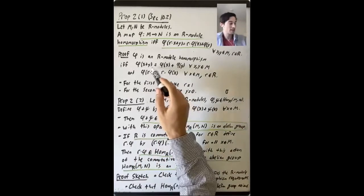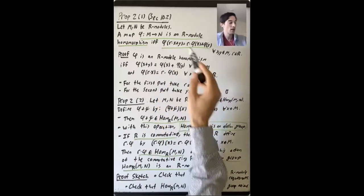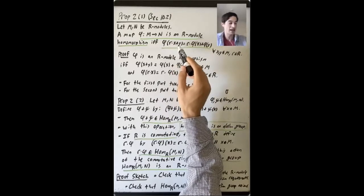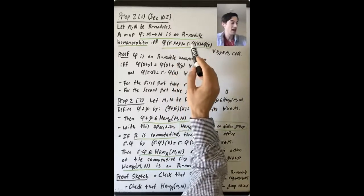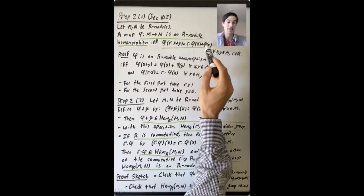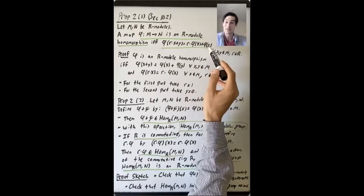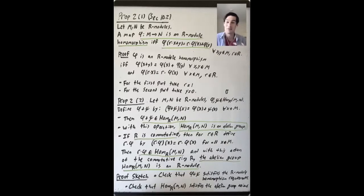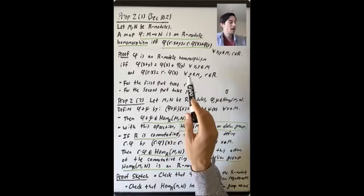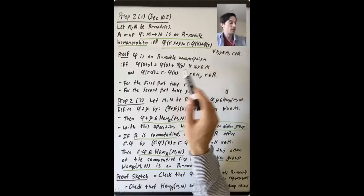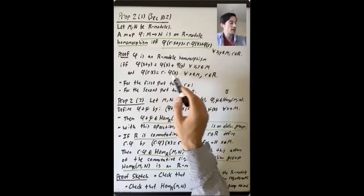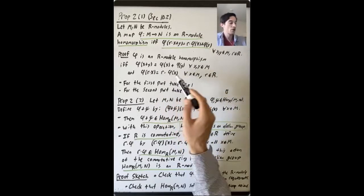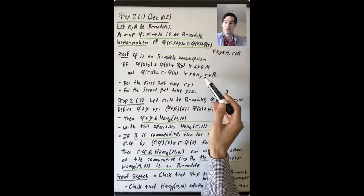What about the second condition? If you take y equals 0, then r·x + 0 is r·x, and r·phi(x) + phi(0). Well, phi(0) has to be 0 because this is a homomorphism of abelian groups. So if you take y equals 0, you see that the second condition automatically holds as well.